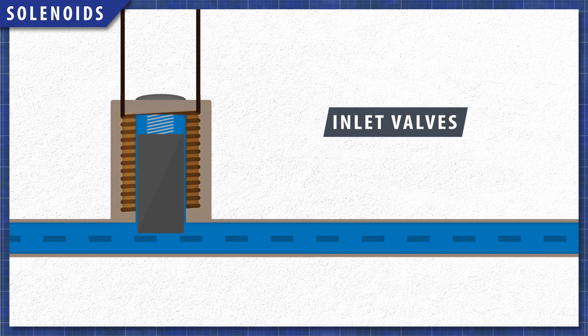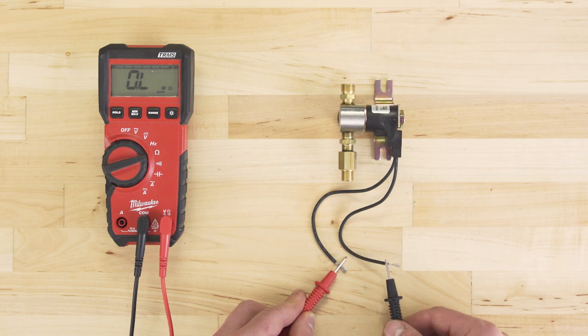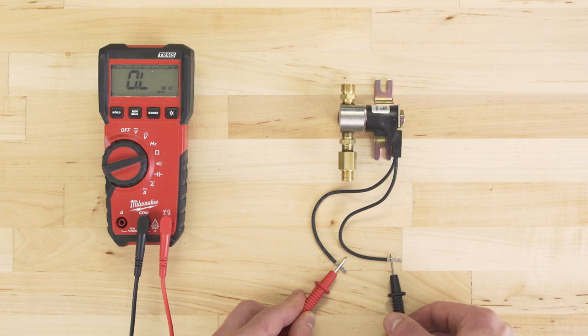When the power shuts off, the spring will push the valve closed. Now if the solenoid doesn't have continuity, then the coil will not energize, and the valve will not open.